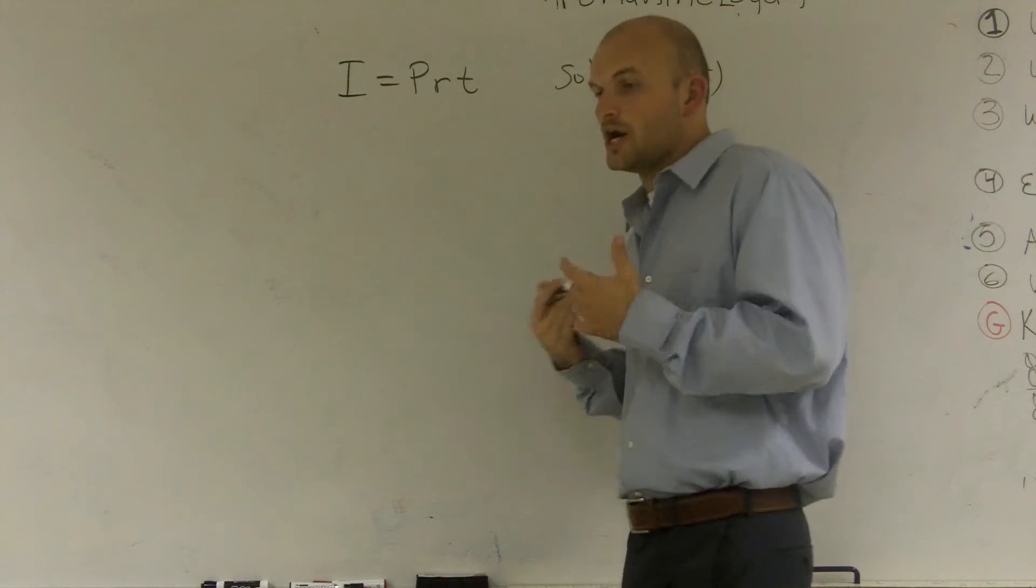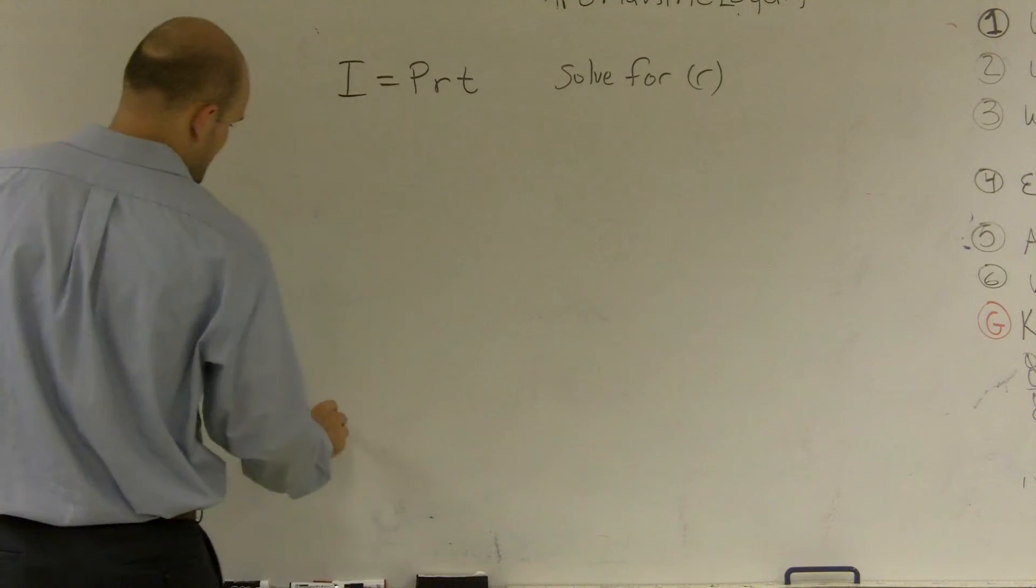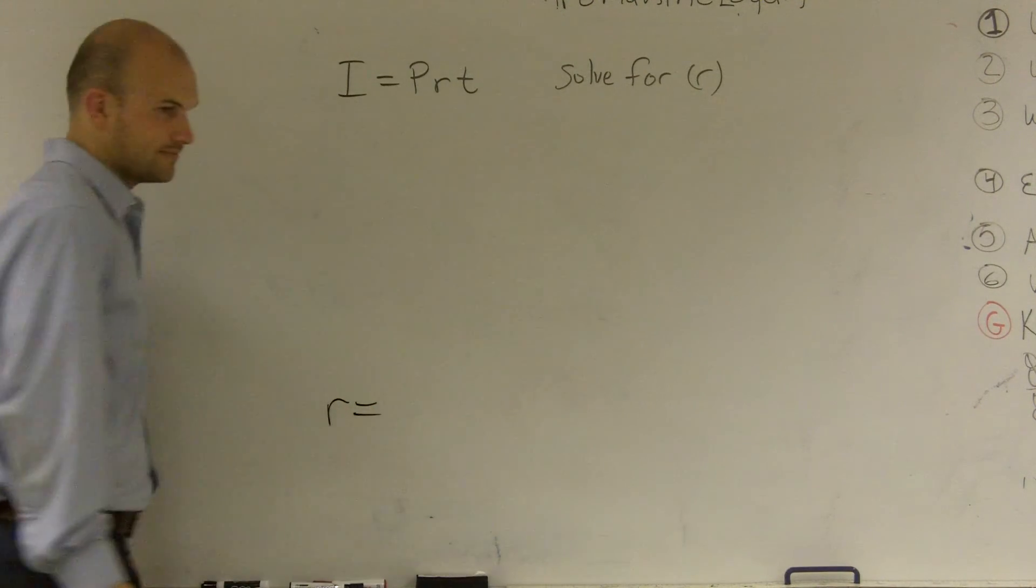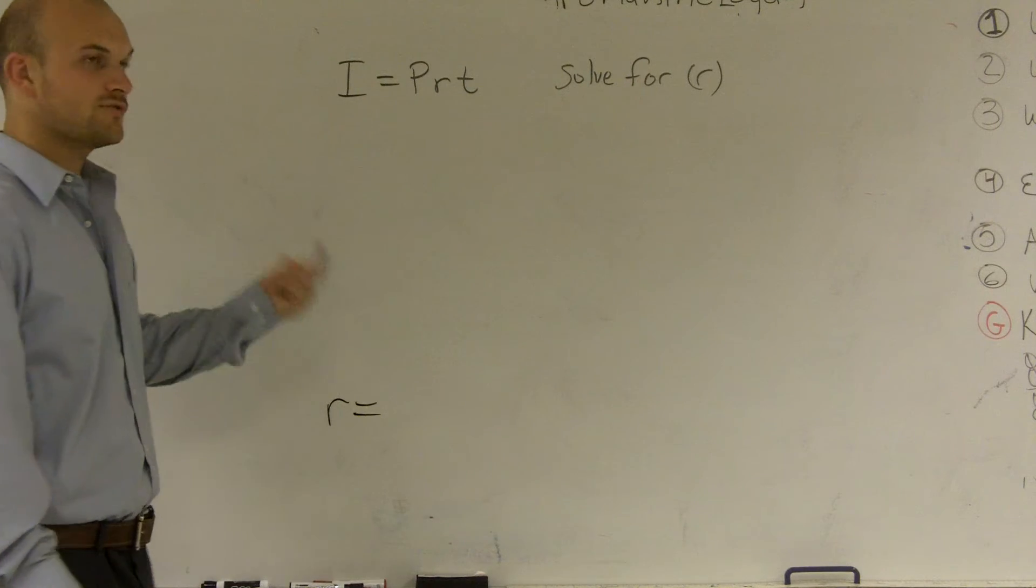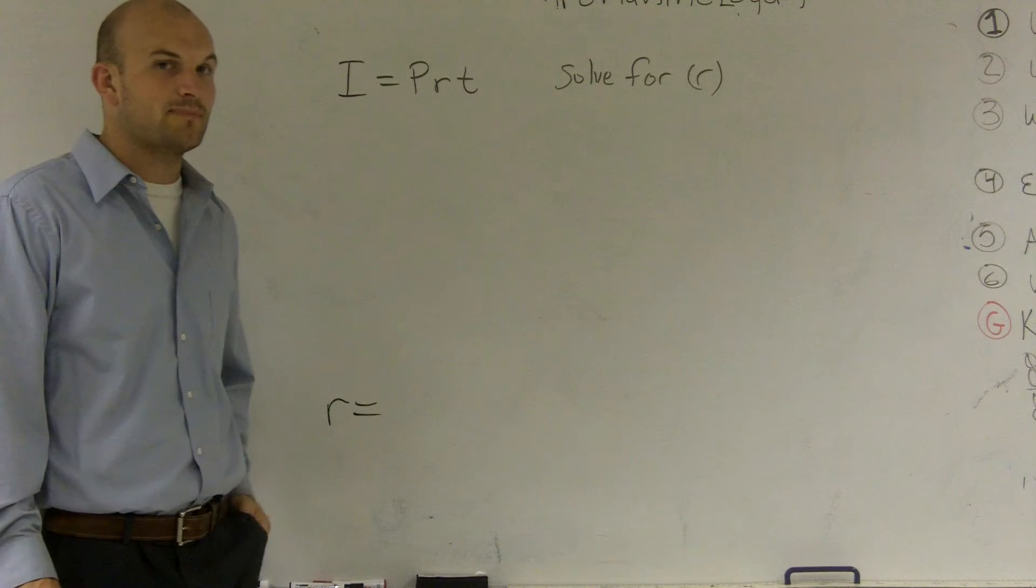All right? So I need to undo multiplication. Now remember, when I say solve for r, that means my final value is r equals something. r is by itself. So right now, why is r not by itself? Well, it's being multiplied by t, and it's being multiplied by p.